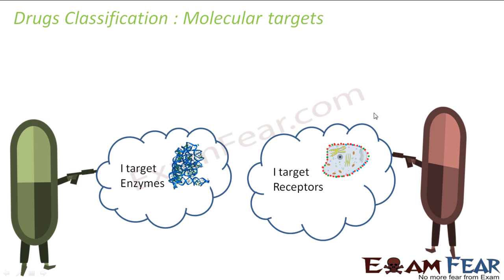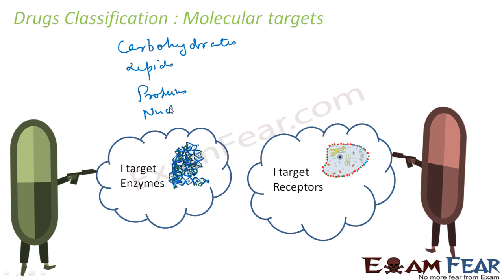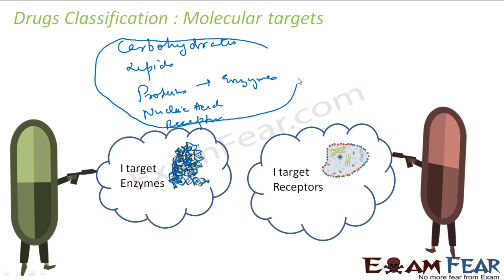The next is molecular target. Here we explain in detail why structure is more important. We want to know which drug targets which macromolecule, because there are so many macromolecules: carbohydrates, lipids, proteins, nucleic acids — that is RNA and DNA — receptors, and enzymes. These are the targets. All drugs generally target only one of these macromolecular targets. So based on that also we classify drugs: some drugs target carbohydrates, some target lipids, some target enzymes.